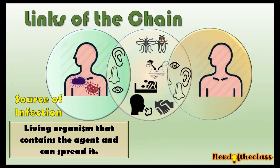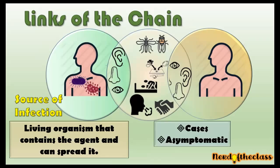The first actual link is the source of infection. The source of infection is a living organism that contains the agent and can spread it. There are two main groups: the cases — those who have signs and symptoms — and asymptomatics. A person could be asymptomatic for many reasons: maybe they are in the incubation period, the convalescent period, or simply have an asymptomatic infection.